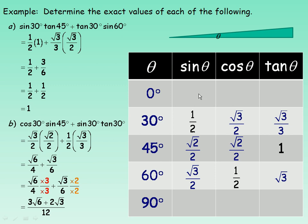Now we're going to fill in the rest of the table, starting with 0 degrees. I've drawn a really skinny triangle, and the idea is that as this side gets shorter, this angle gets really close to 0 degrees. If it actually collapses to 0, then the opposite side would have a length of 0. For sine — opposite divided by hypotenuse — as this angle approaches 0, the opposite side approaches 0, giving us 0 divided by the length of the hypotenuse. And 0 divided by anything is 0, so that's why the sine of 0 is 0.